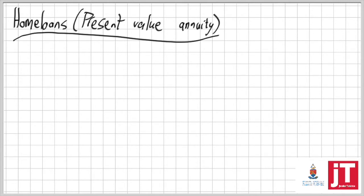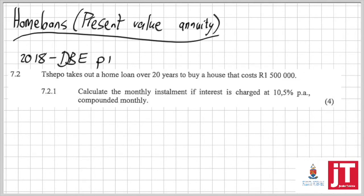So today's video is specifically about home loans or present value annuities and it is all about practicing how to calculate x and how to calculate the total values, interest, those wonderful concepts. That's part of financial mathematics. If you haven't watched the previous videos, go and watch them and let's dive into a wonderful example that comes from the 2018 Department of Basic Education paper 1.